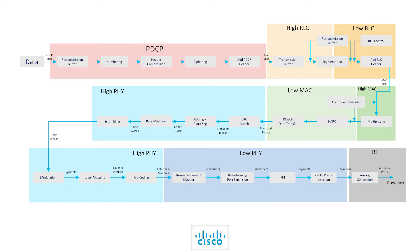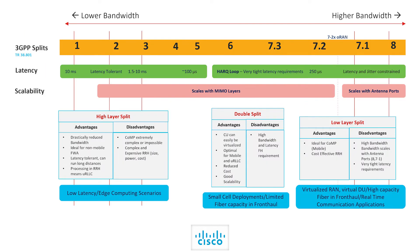I will freeze the frame there for you to take it all in. While consuming this, it is important to understand the impact of these splits on the three essential components of a 5G network: latency, bandwidth and scalability. A lower layer split close to the RF means higher bandwidth on the fronthaul link and very tight latency requirements, and bandwidth scales with the increase in antenna ports. A higher layer split close to PDCP means a drastic reduction in bandwidth and relaxation of latency, enabling long distances between the CU and the RU. Higher layer splits also scale with MIMO layers.